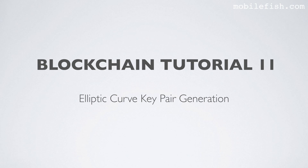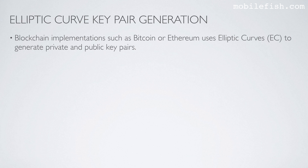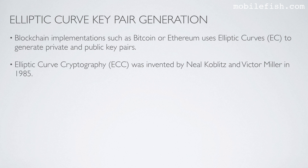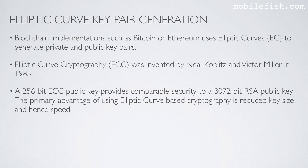In this video I will explain how the elliptic curve is used to generate a public and private key pair. Blockchain implementations such as Bitcoin or Ethereum use elliptic curves to generate private and public key pairs. Elliptic curve cryptography was invented by Neil Koblitz and Victor Miller in 1985. A 256-bit ECC public key provides comparable security to a 3072-bit RSA public key. The primary advantage of using elliptic curve based cryptography is reduced key size and enhanced speed.